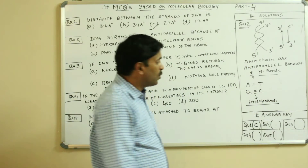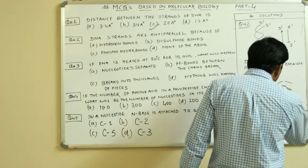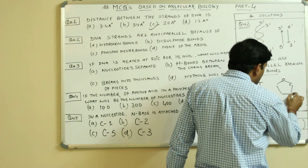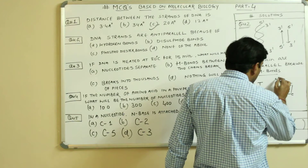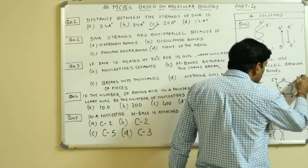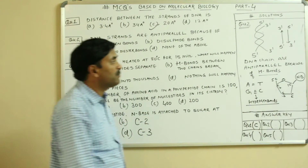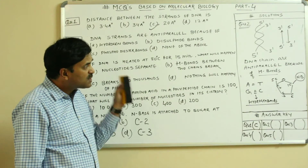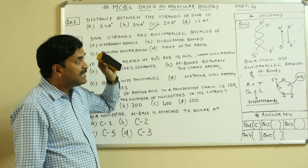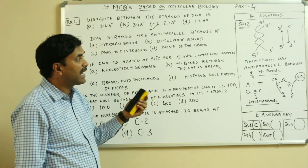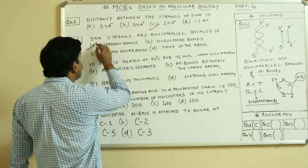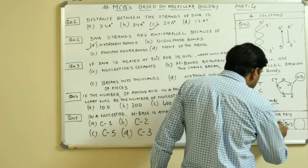Always remember that the nitrogen bases combine with sugar at its C1 position — that is carbon number 1. The nitrogen base combines at the C1 position, and this arrangement is only possible in the case of hydrogen bonds. If the chains are anti-parallel, then only hydrogen bonds can be found. So DNA strands are anti-parallel just because of the hydrogen bonds. Question number 2 has the answer A.